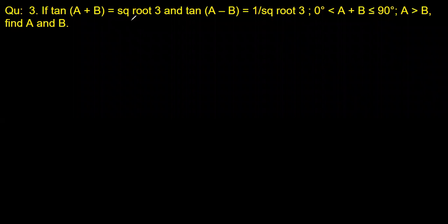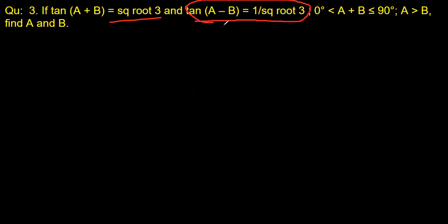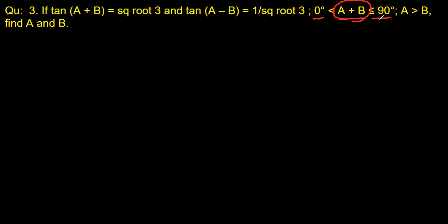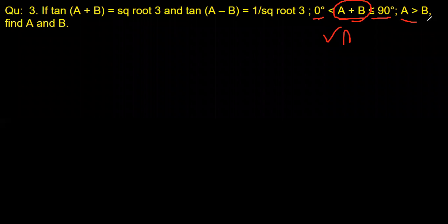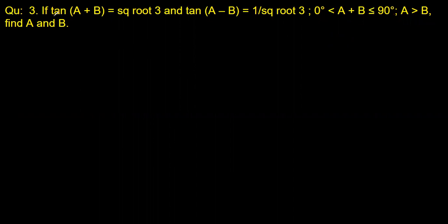We are given that tan(a+b) = √3 and tan(a-b) = 1/√3. We are also given that 0 ≤ a+b ≤ 90°, meaning both angles a and b are acute angles. We are also given that angle a is greater than b.